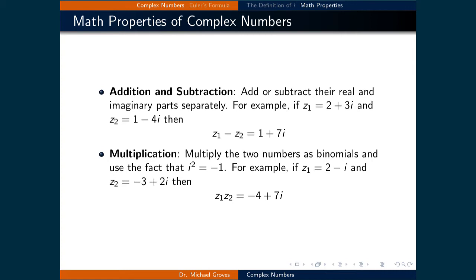For multiplication, we will multiply the two numbers as binomials, and use the fact that i squared is equal to negative 1. For example, if z1 is equal to 2 minus i, and z2 is equal to minus 3 plus 2i, then z1 times z2 is equal to minus 4 plus 7i.